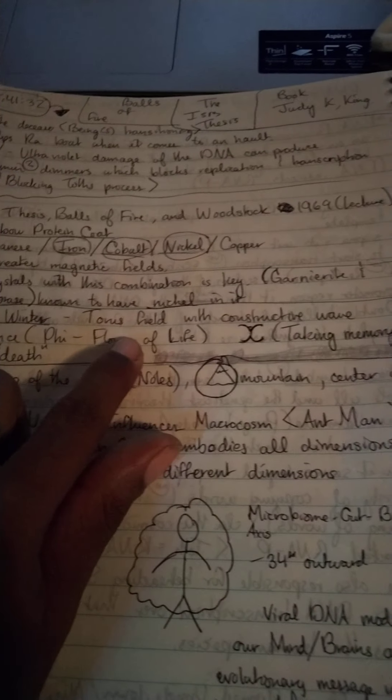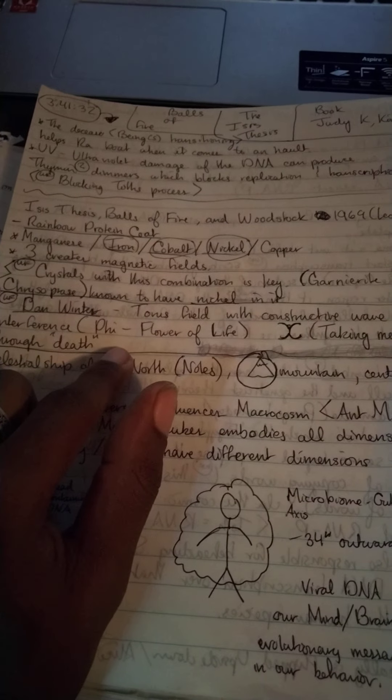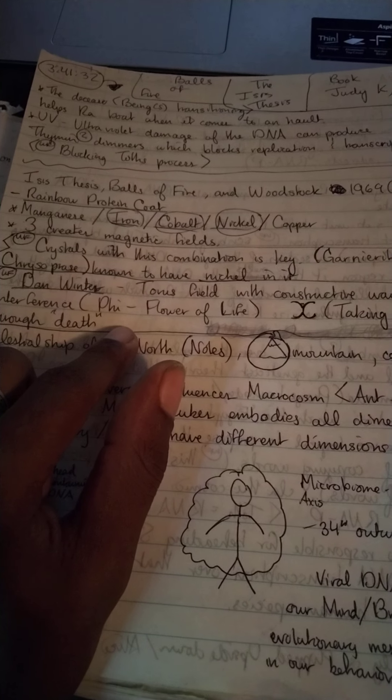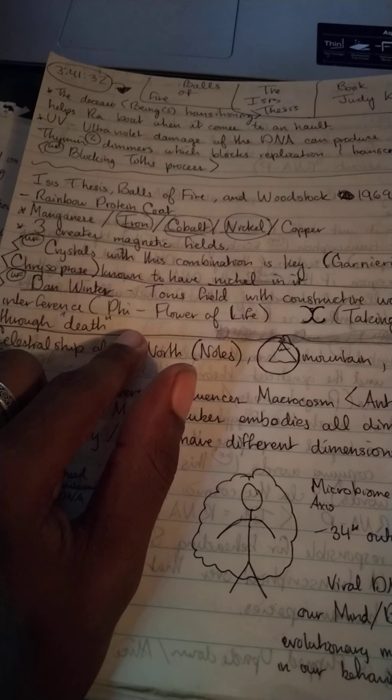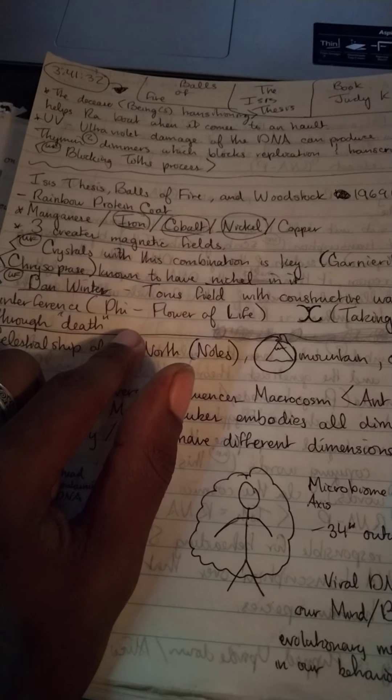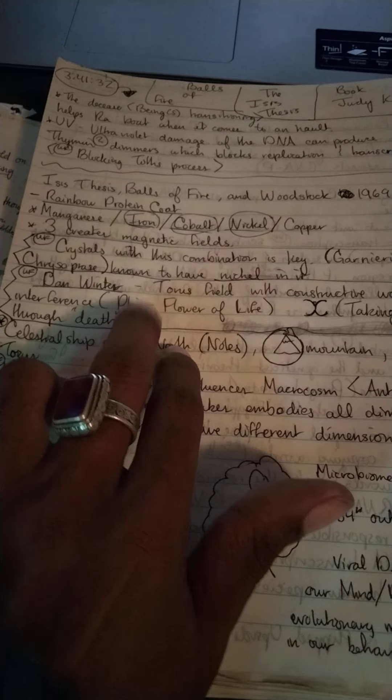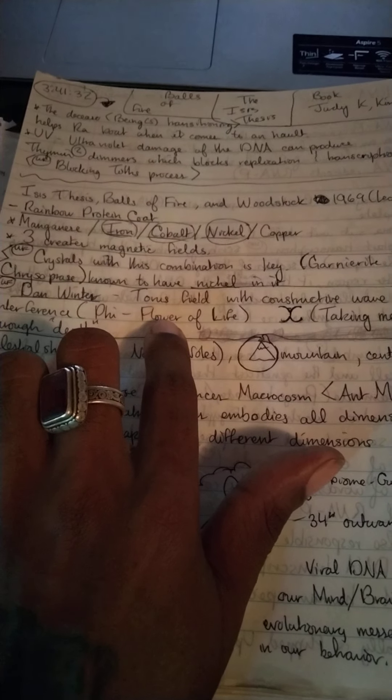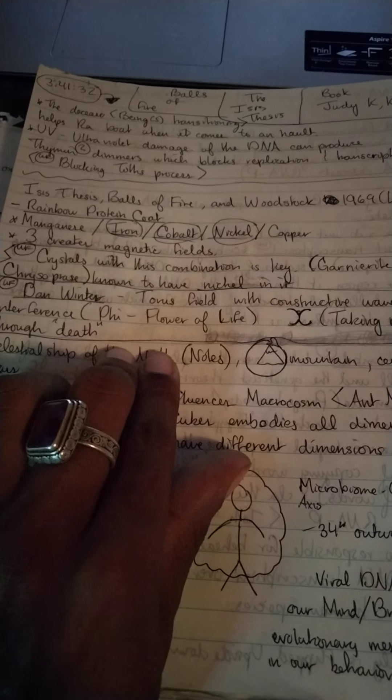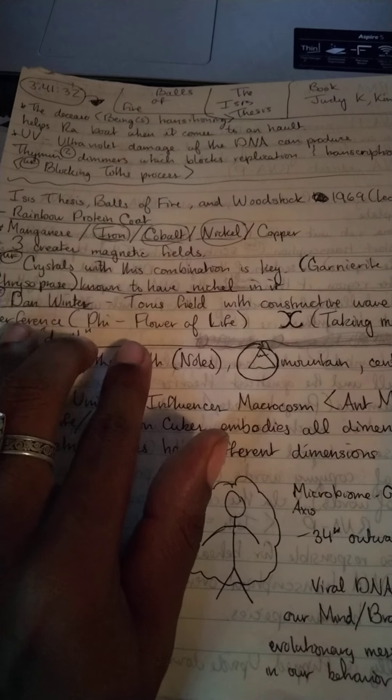Dan Winter talks about this as well, talking about the torus field with constructive wave interference. When our heart is in coherence and alignment and our chakras are in alignment, our electromagnetic energy field, the ley lines within it, move in the phi ratio. The phi ratio allows for the waves within our torus field to constructively interfere with each other.